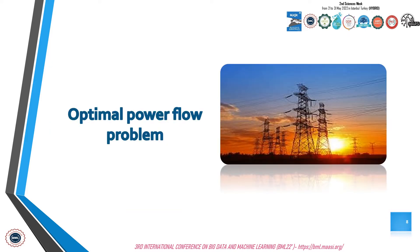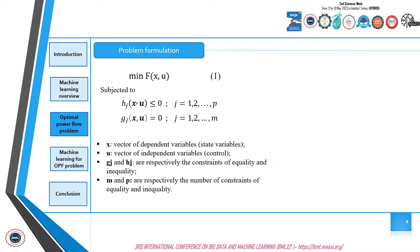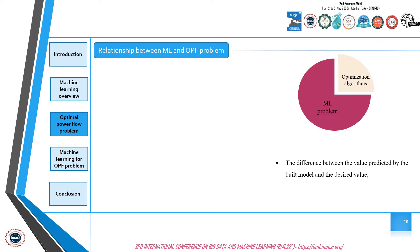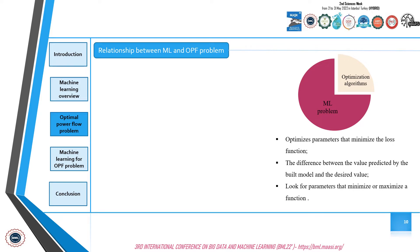In this part, we show how we can formulate the optimal power flow problem. An optimal power flow problem allows optimizing the objective function f by adjusting the control variables of the electrical system under several equality and inequality constraints. There are several objective functions depending on the intended purpose; among the most common are quadratic fuel cost, square cost with a valve point effect, and others. Machine learning optimizes parameters that minimize the loss function — the difference between the value predicted by the model and the desired value — while optimization algorithms look for parameters that minimize or maximize a function responding to the optimization problem.